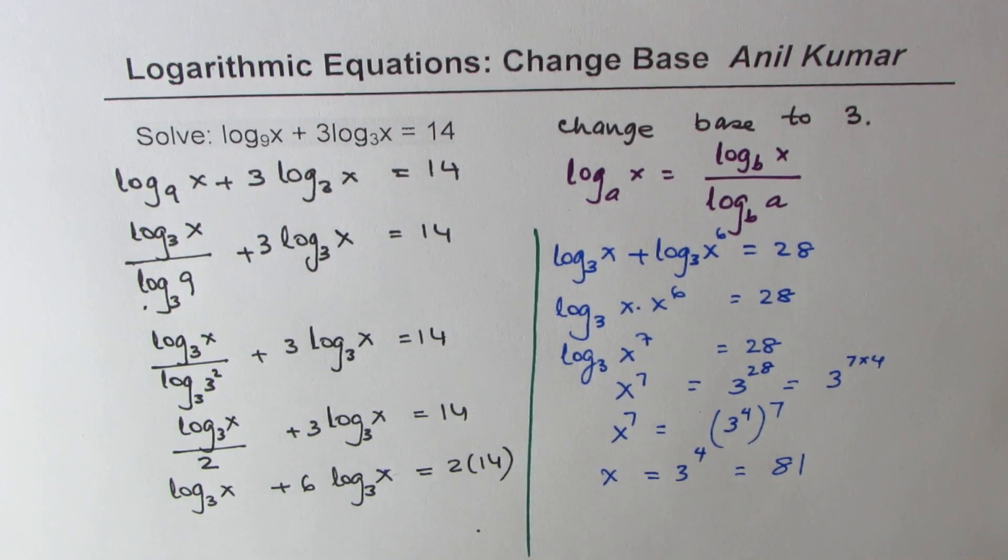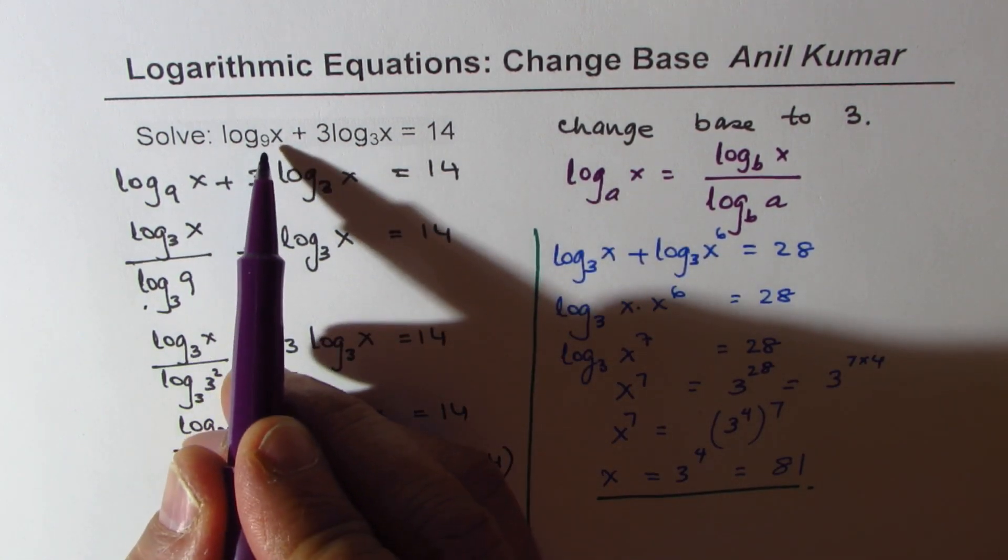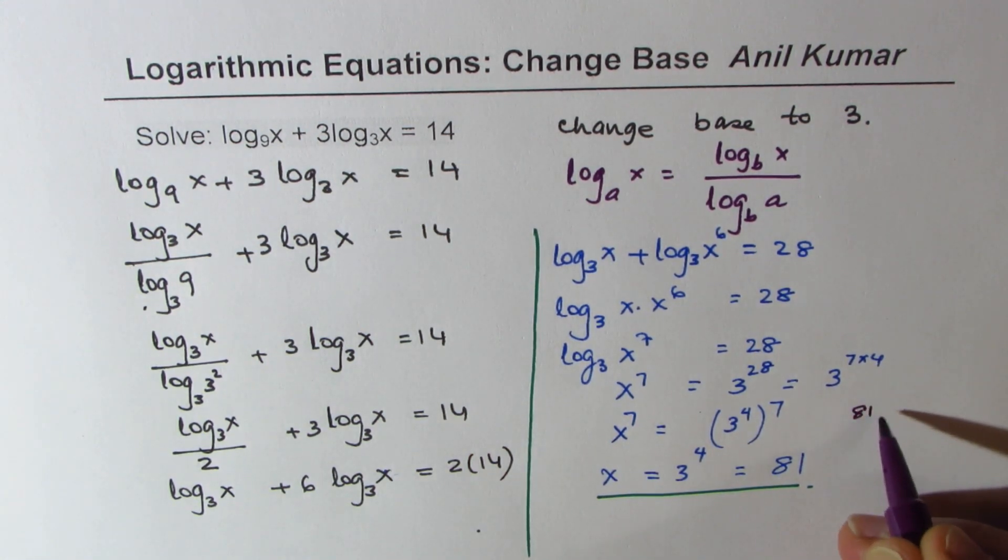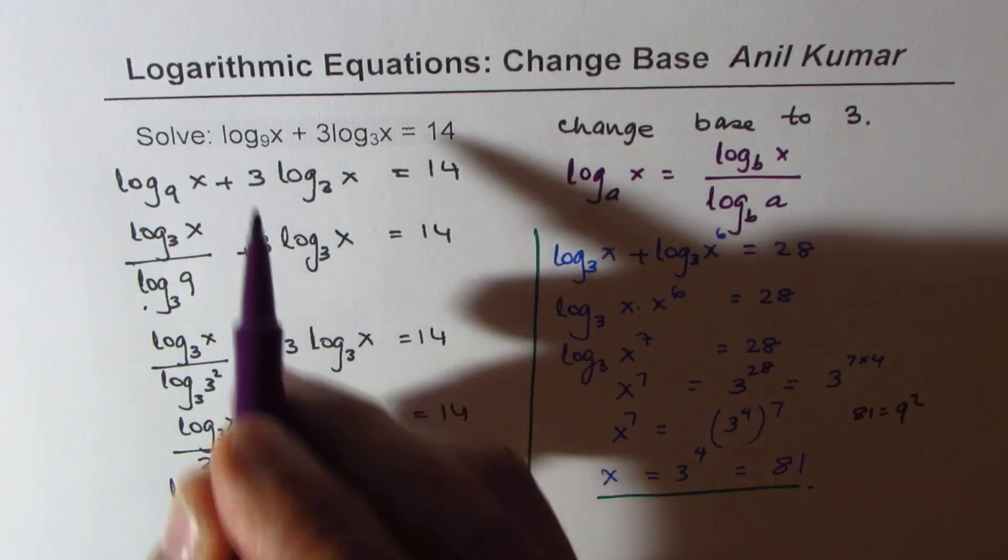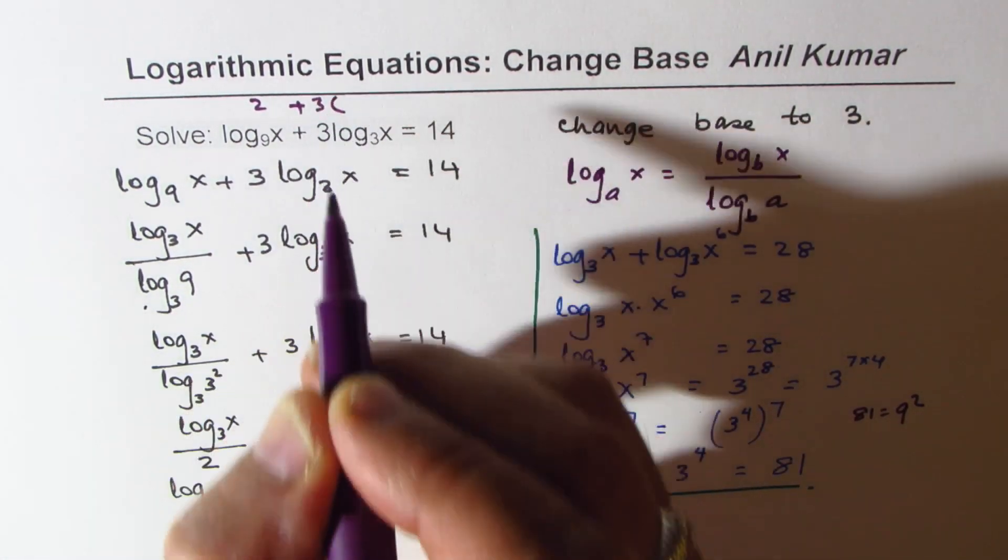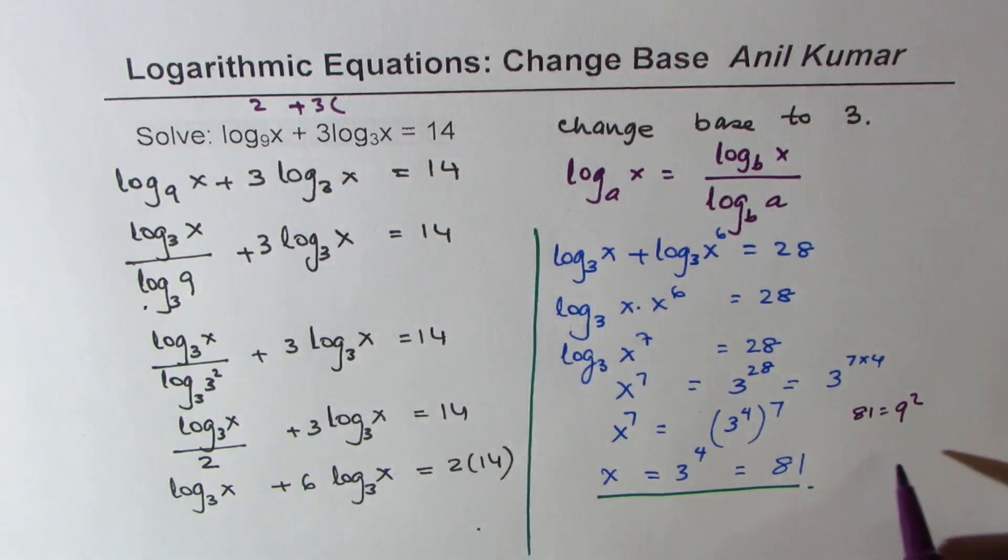81 becomes the solution for the given equation. You can always substitute the value and check your result. If I substitute 81 here, which is 9 squared, we get 2 plus 3 times—in this case, 81 is also 3 to the power of 4.